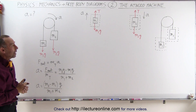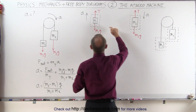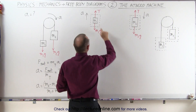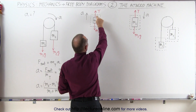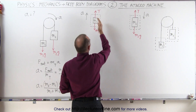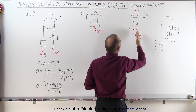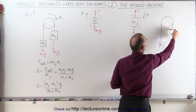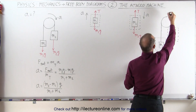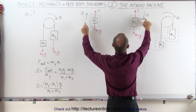We can also solve this using free-body diagrams. We take M1 and M2 separately and look at all the forces acting on each. There is also the internal force between M1 and M2: the tension T. Relative to M1, the tension of the string pulls upward, and relative to M2, the tension also pulls upward. We're assuming the acceleration will be in the indicated direction, shown with arrows.